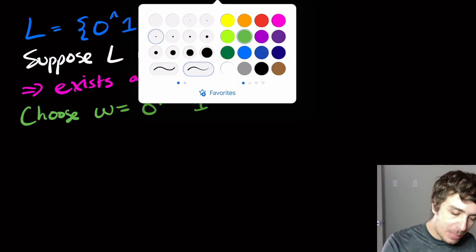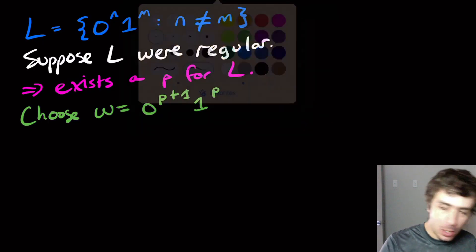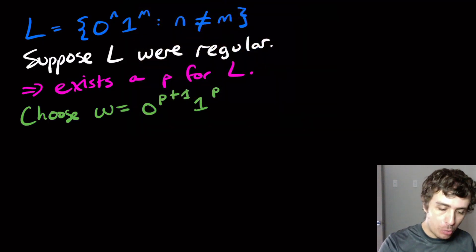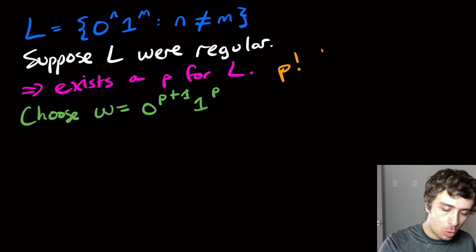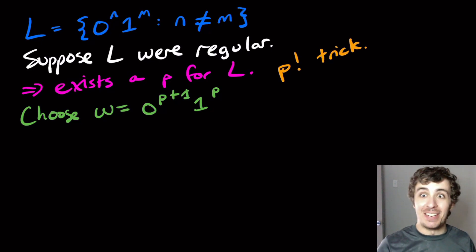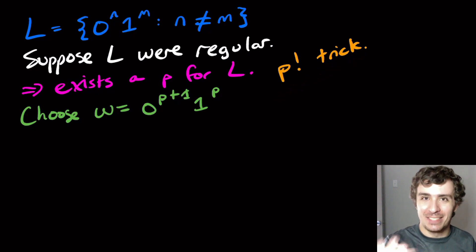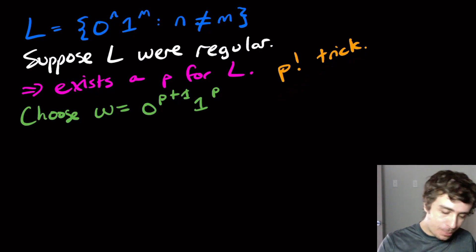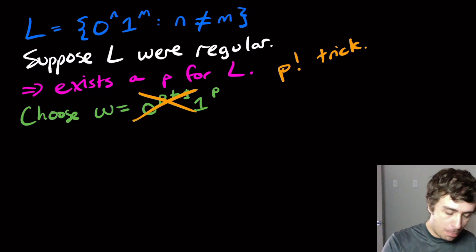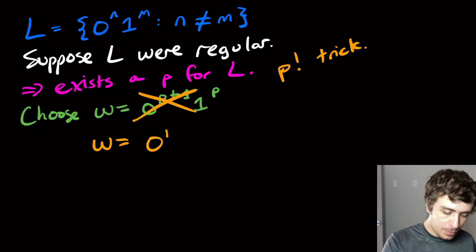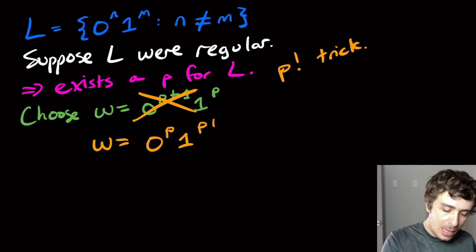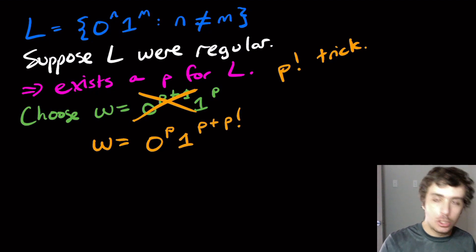So we're going to use something called the p factorial trick — I've done it on the channel and you can search for it, but I'll show it again here. This string will not help us. Instead, let's pick the string 0 to the p, 1 to the p plus p factorial.